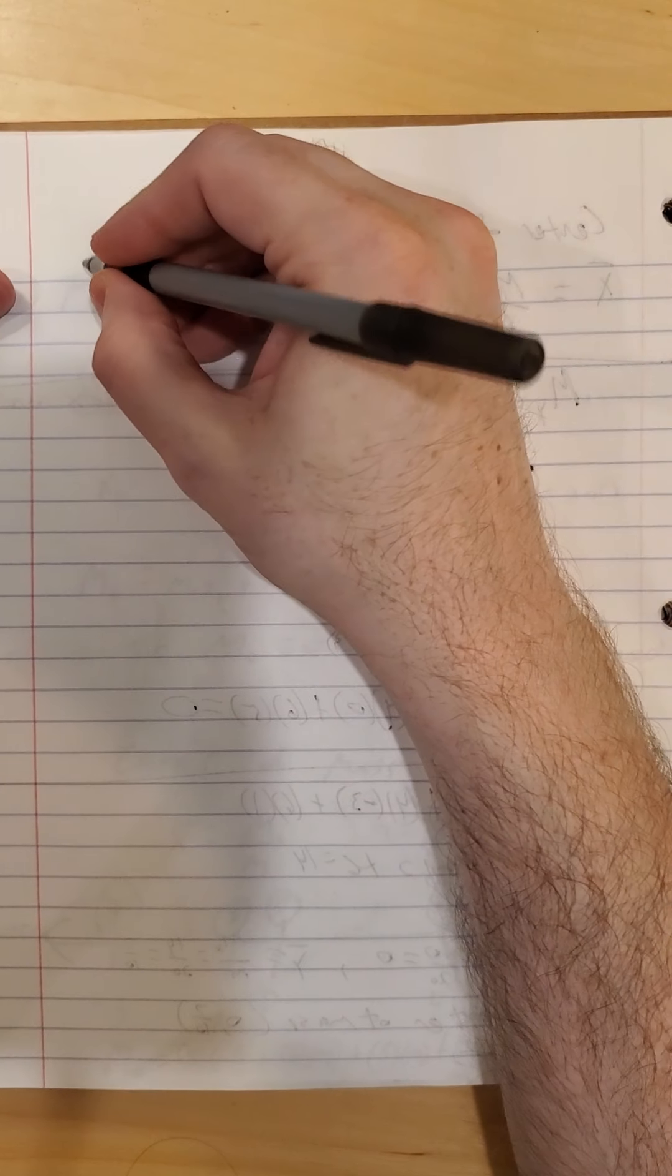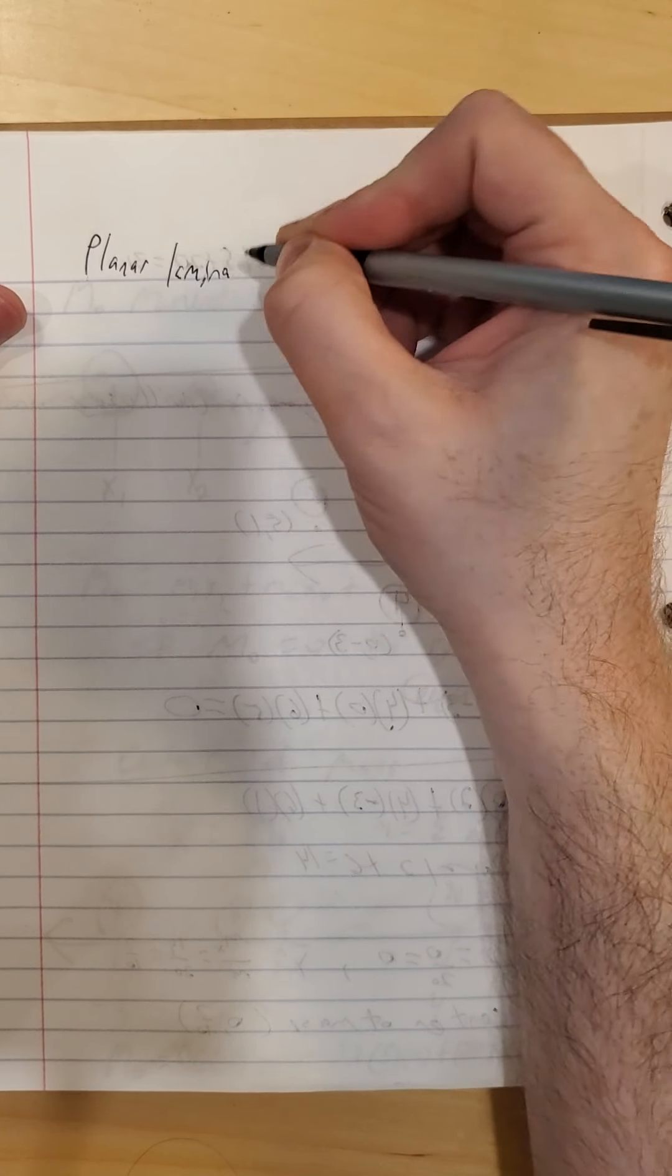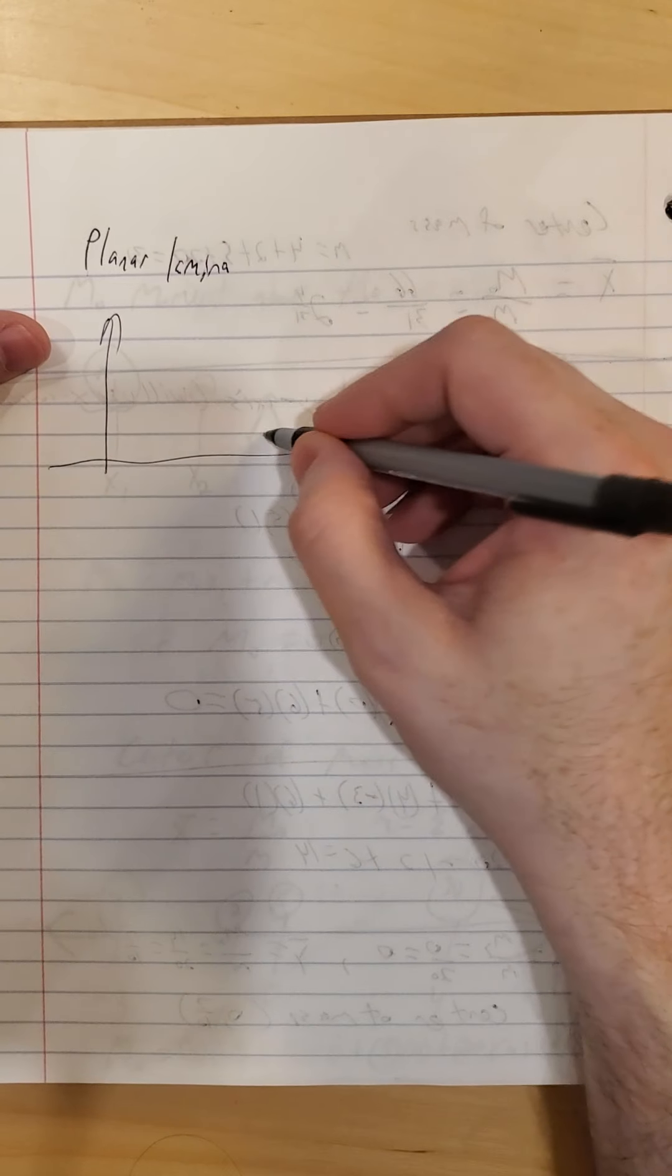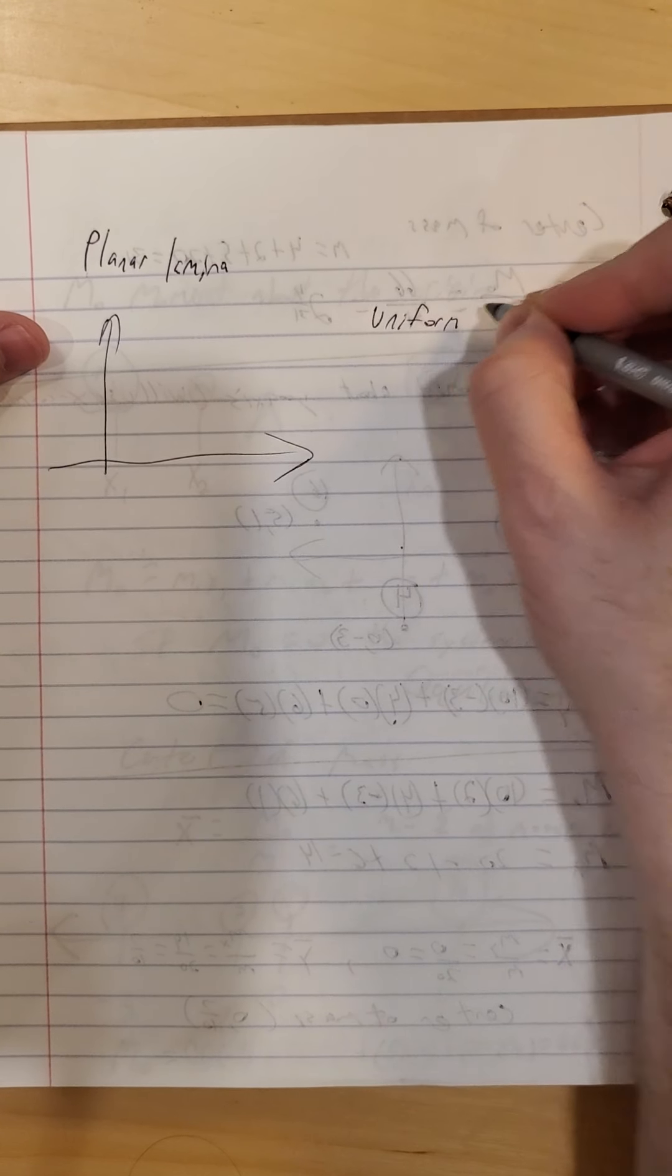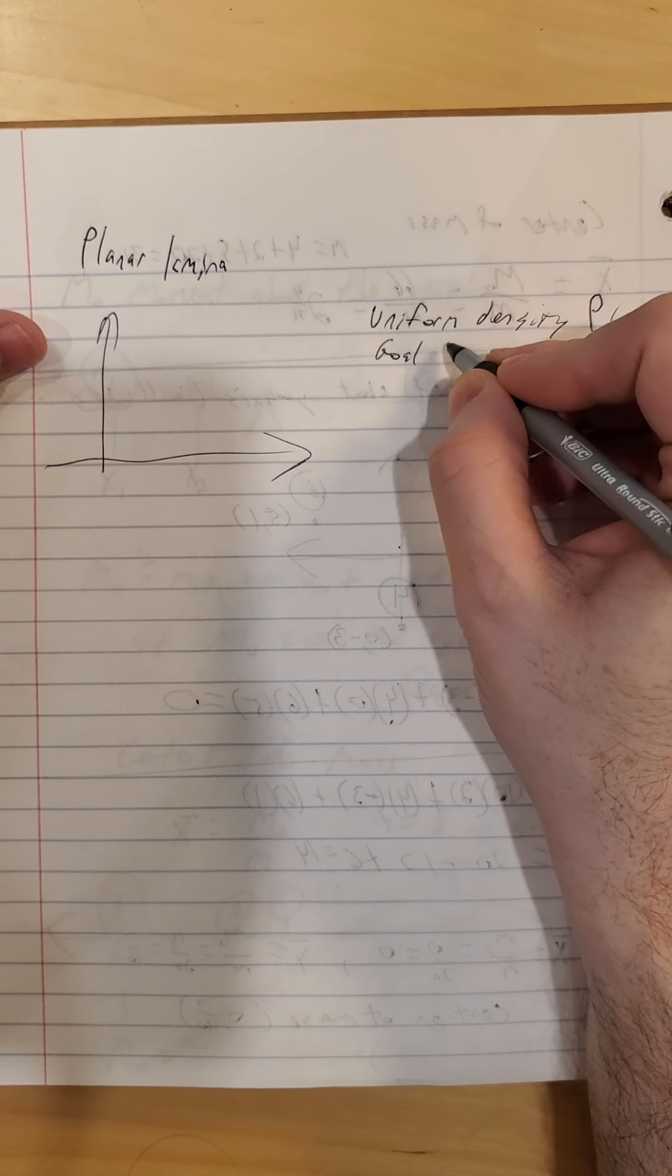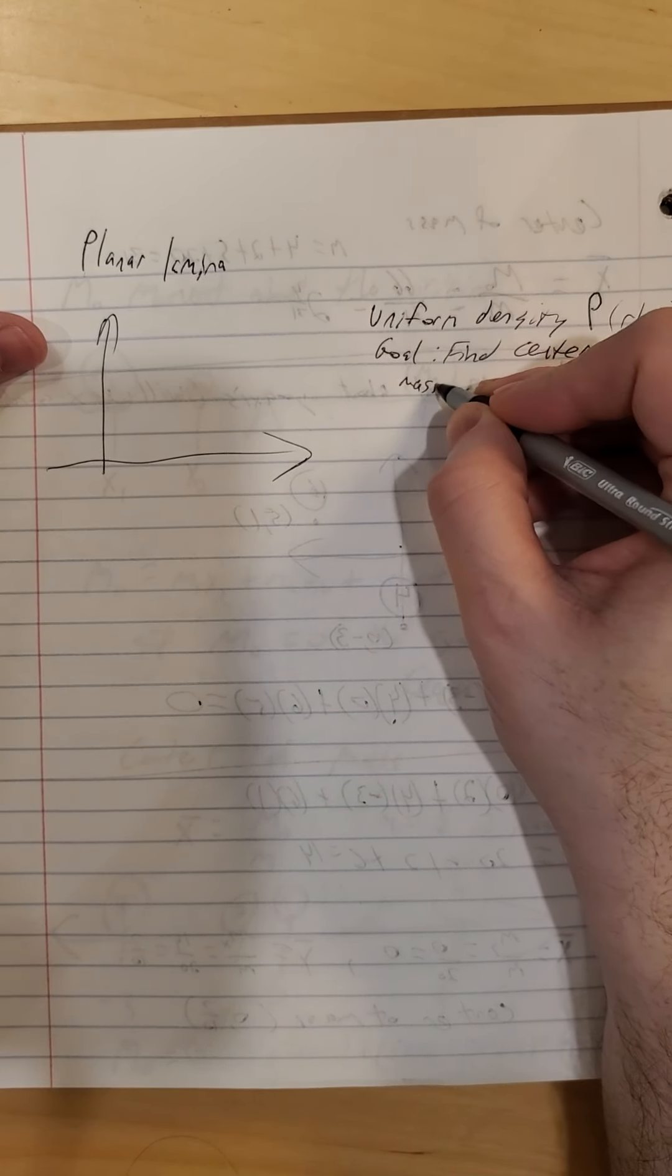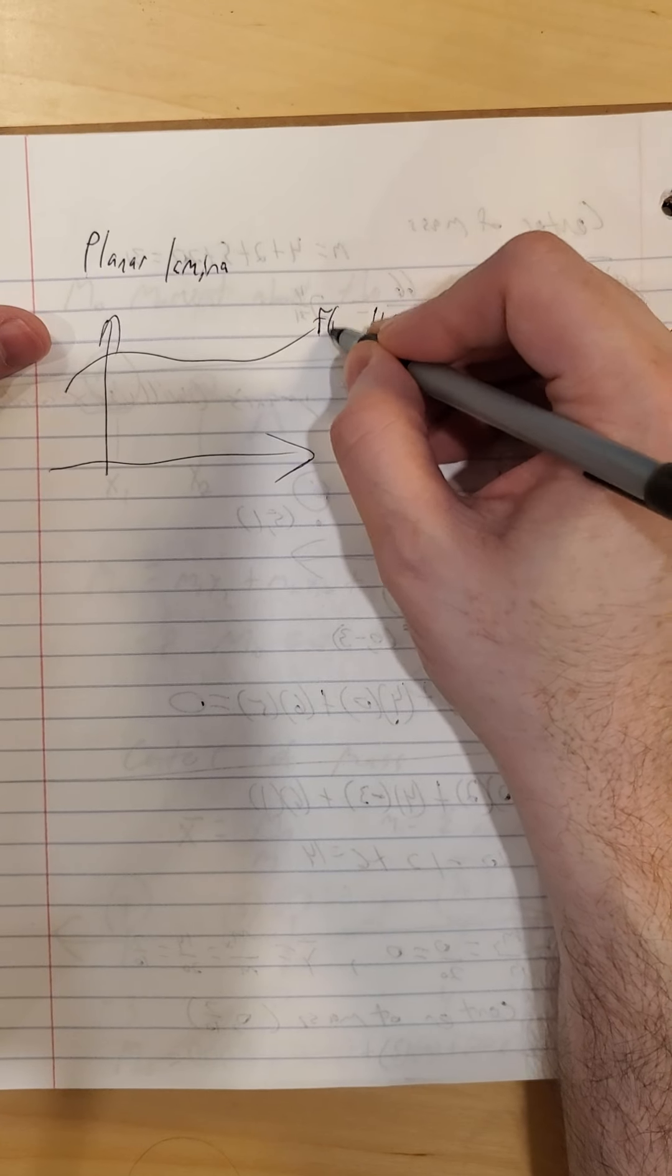Okay, continuing on with our section, we're now looking at what's called a planar lamina. So the idea is that we have a flat plate of some material and it has uniform density rho. We have two curves, f of x and g of x.